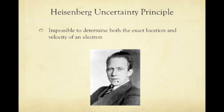The Heisenberg uncertainty principle states that it was impossible to determine both the exact location and the velocity of an electron. When we're looking at the hydrogen emission spectrum, we're not looking at the electrons, we're looking at where the electrons have been. So it made it pretty hard.